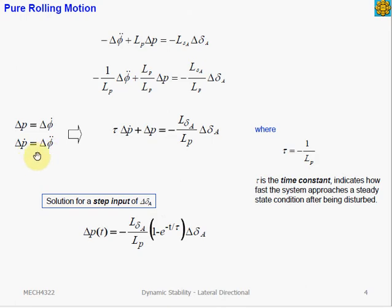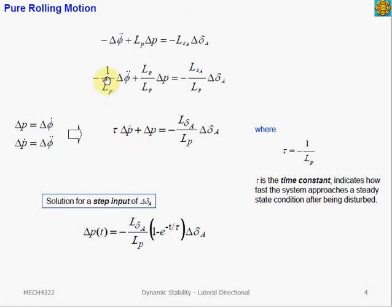For a special case where the center of gravity of the aircraft is constrained, like in a wind tunnel model, we can align the body frame and the inertial frame. Note that phi, the Euler roll angle, is always described in the earth-fixed frame, while p, the roll rate, is always described in the body-fixed frame. But when we align the two frames, we can assume that the inertial roll rate phi dot equals the body-fixed roll rate p.